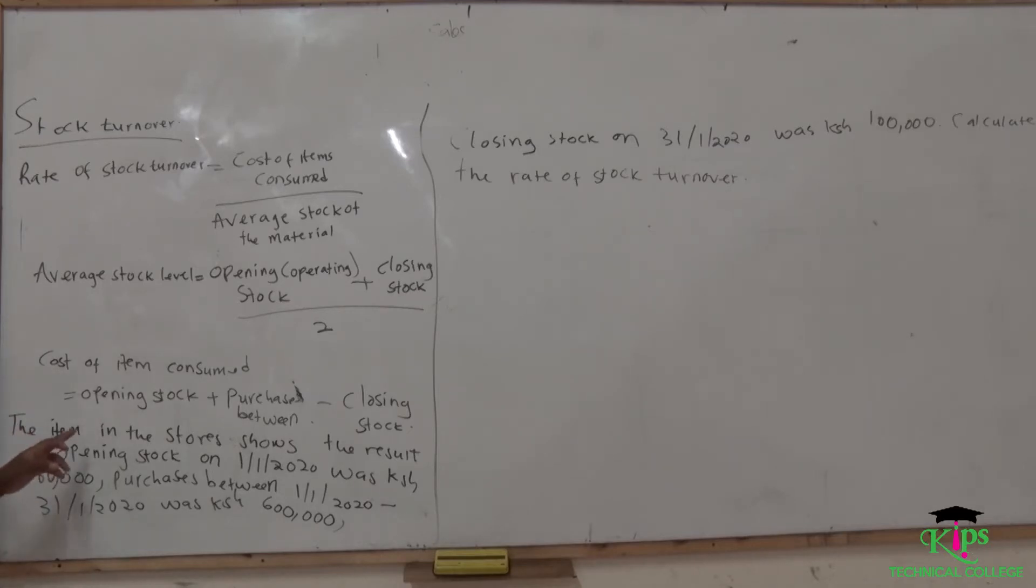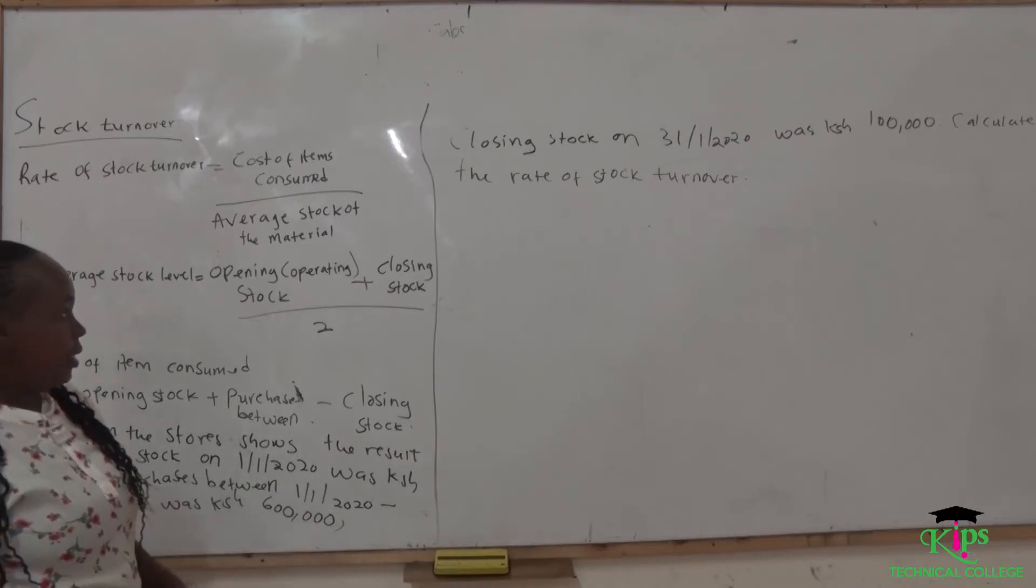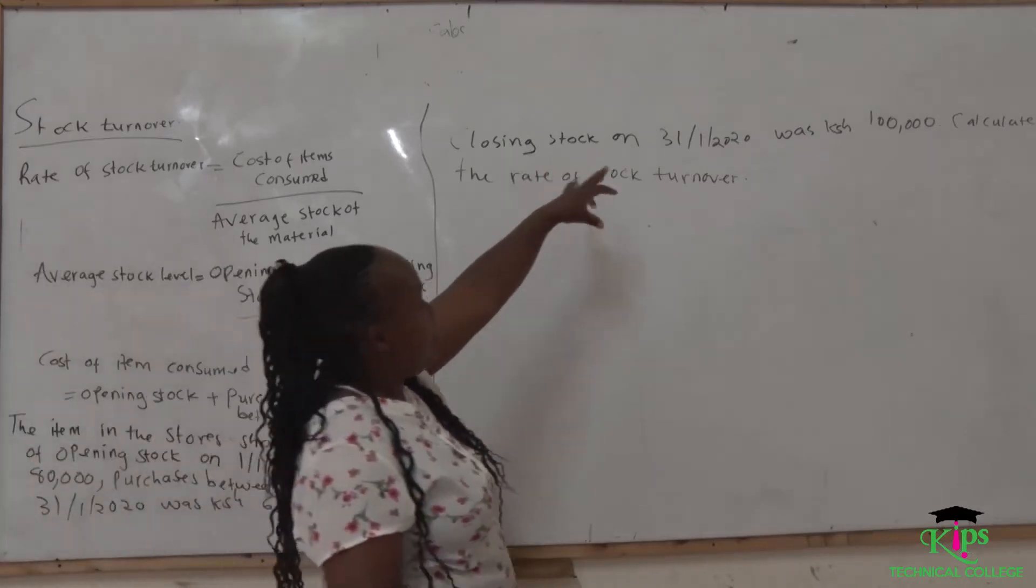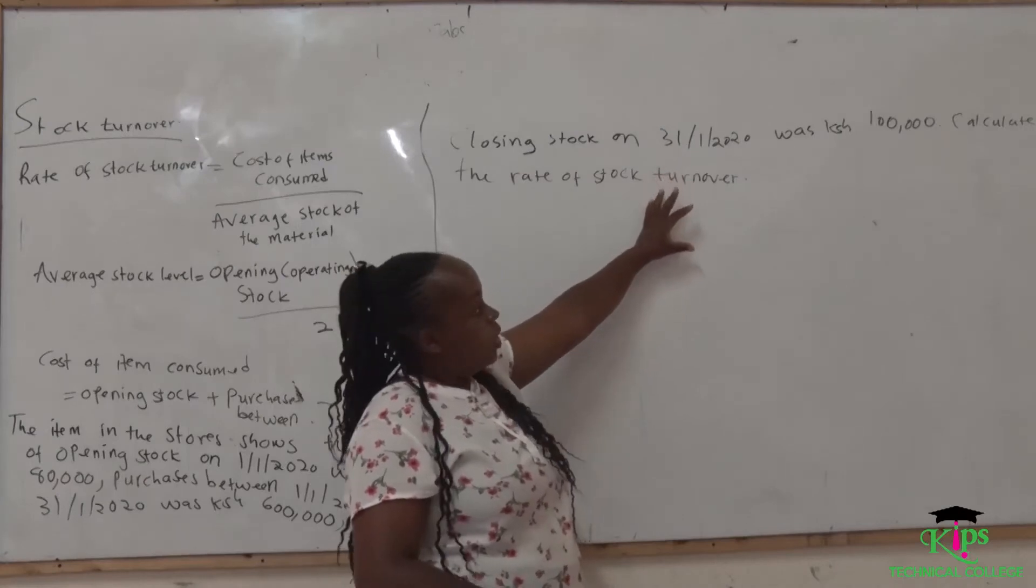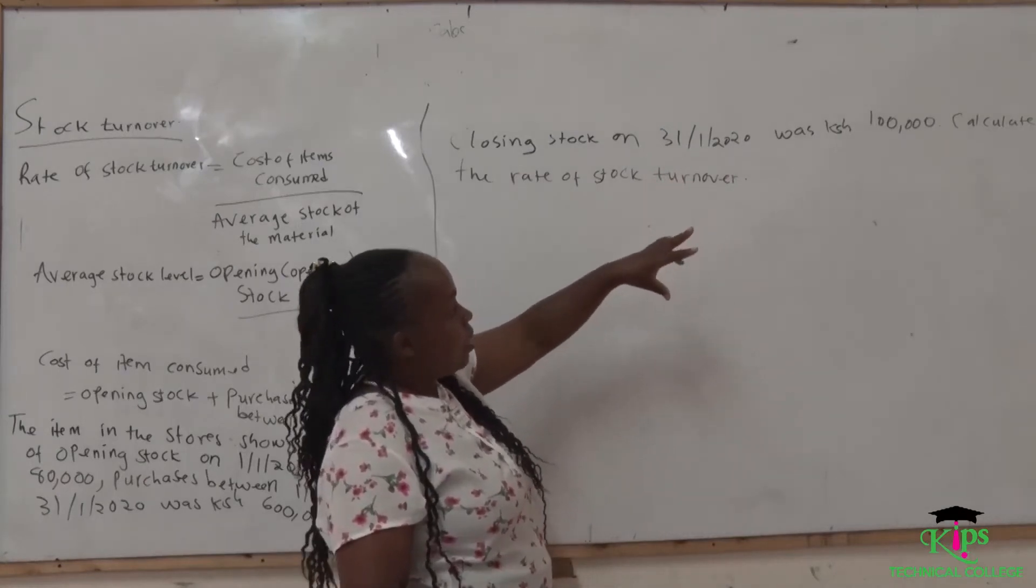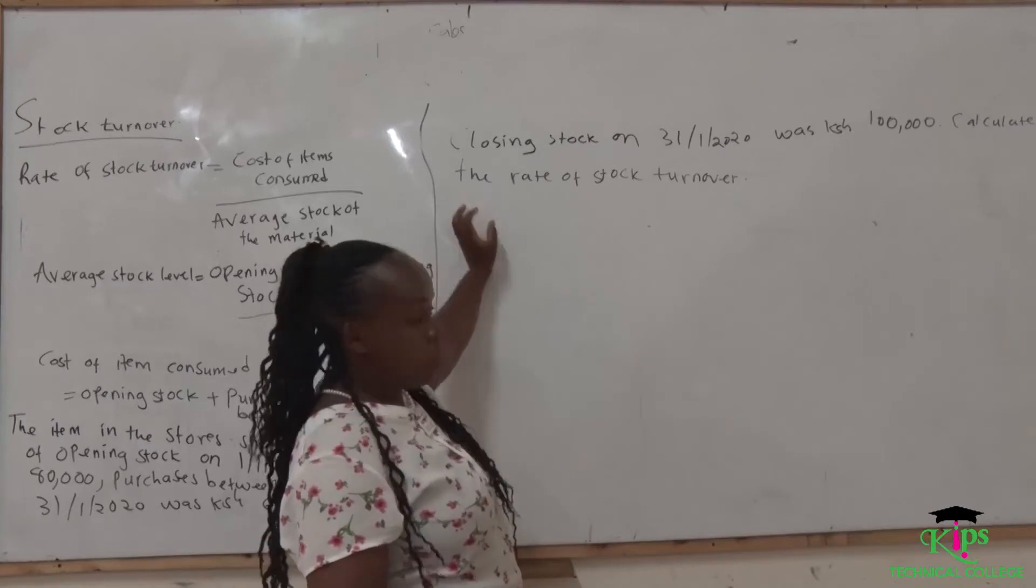We have a calculation here that is going to help us to calculate this. This example is, the item in the stores shows the result of the opening stock on first January 2020 was $80,000. Purchases between date 1 January 2020 and date 31 January 2020 was $600,000.